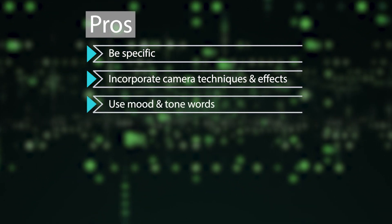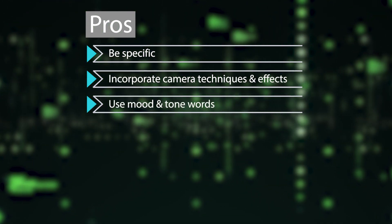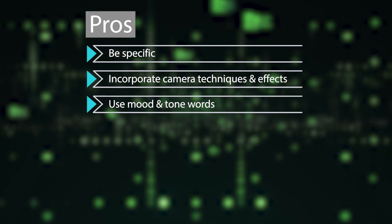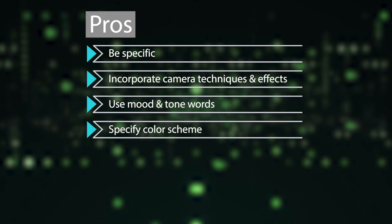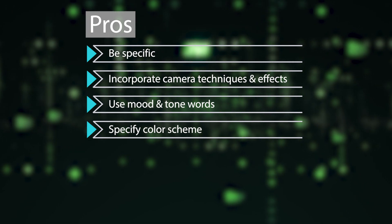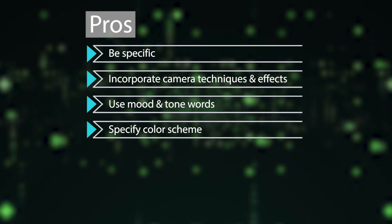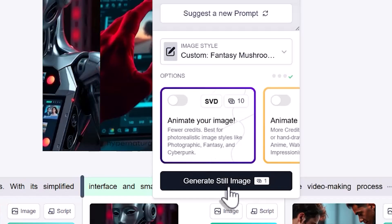Set the atmosphere with mood and tone words like dark, vibrant, mysterious, or dreamlike. Specify colors and themes by including color schemes or styles such as vibrant, monochrome, or futuristic to guide the aesthetic. Simple details like these will help Hypernatural create visuals that accurately match your vision.